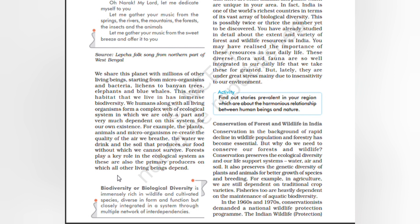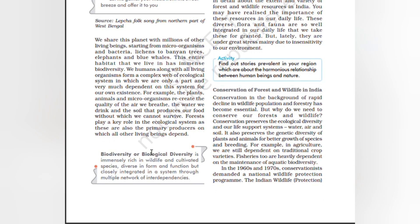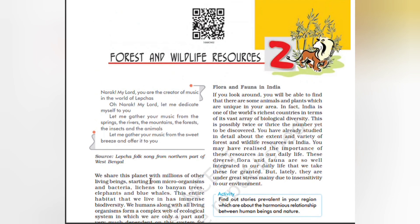For example, plants, animals, and microorganisms recreate the quality of the air we breathe, the water we drink, and the soil that produces our food, without which we cannot survive. Forests play a key role in the ecological system as they are the primary producers on which all other living beings depend. Biodiversity or biological diversity is immensely rich in wildlife and cultivated species, diverse in form and function but closely integrated through multiple networks of interdependencies. India is one of the world's richest countries in terms of its vast array of biological diversity.